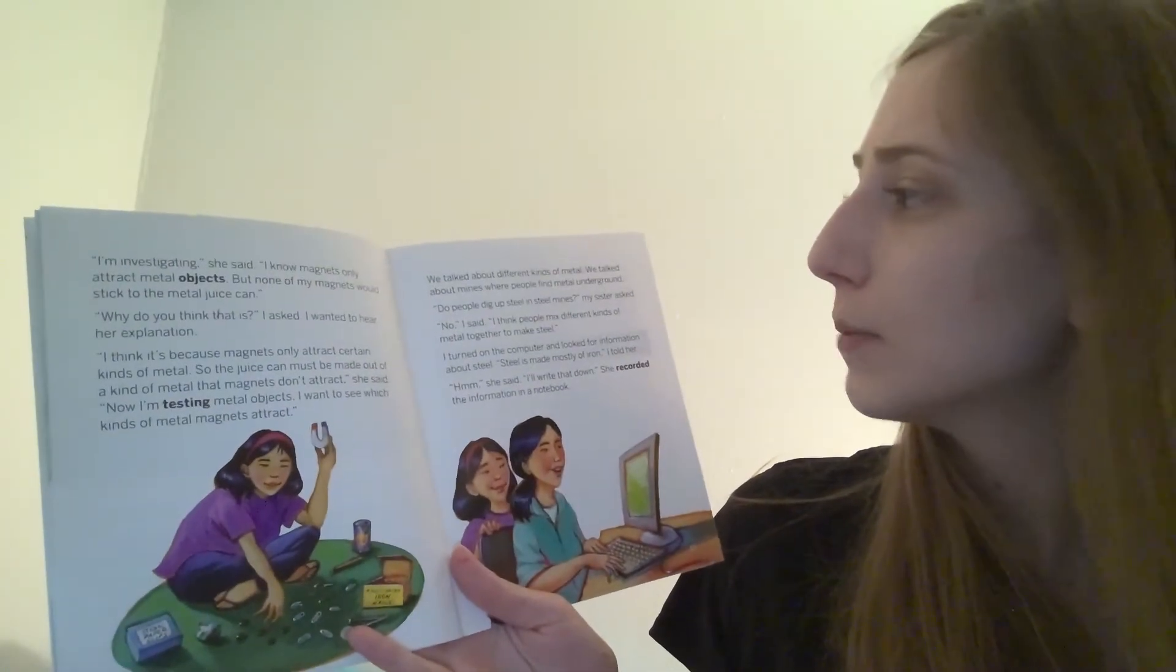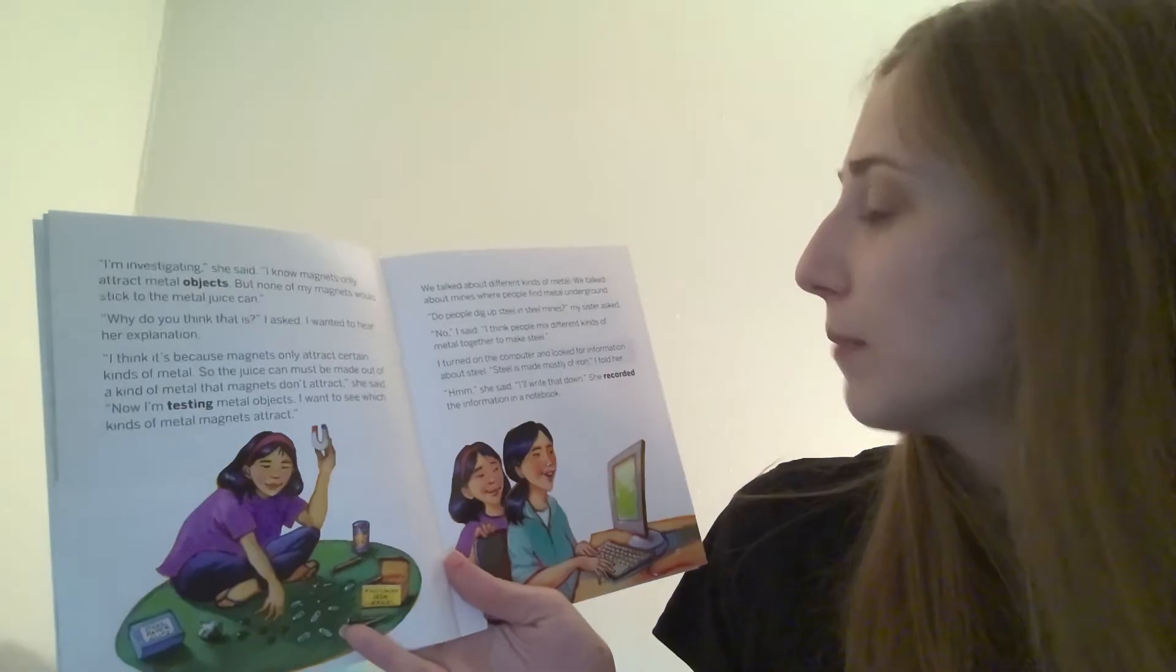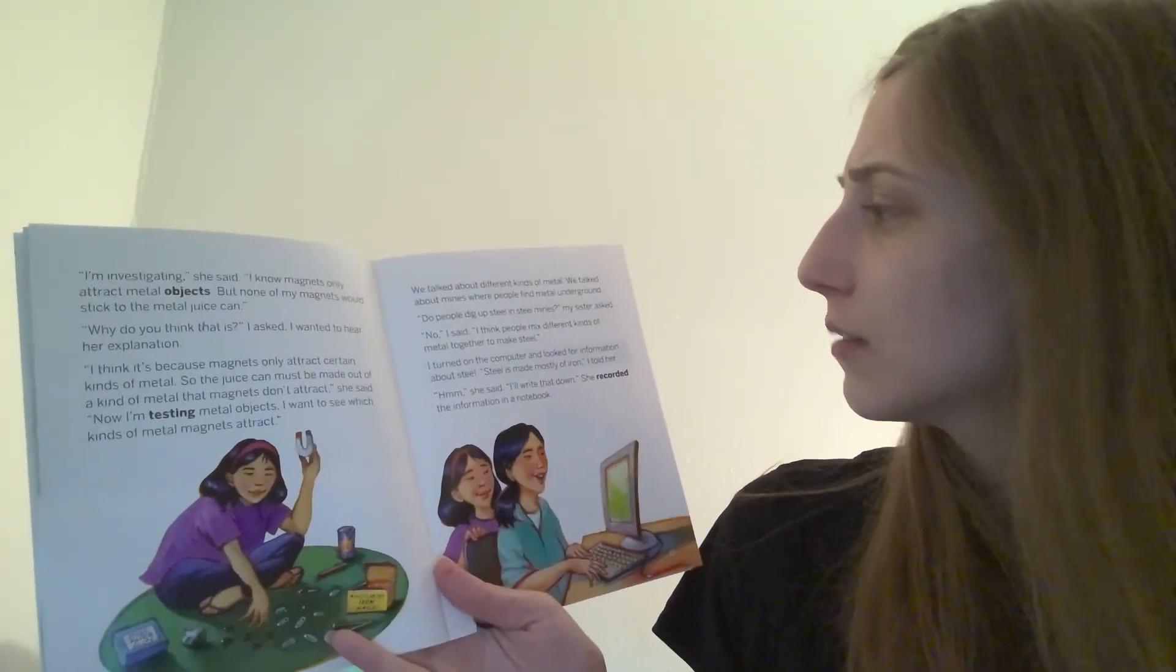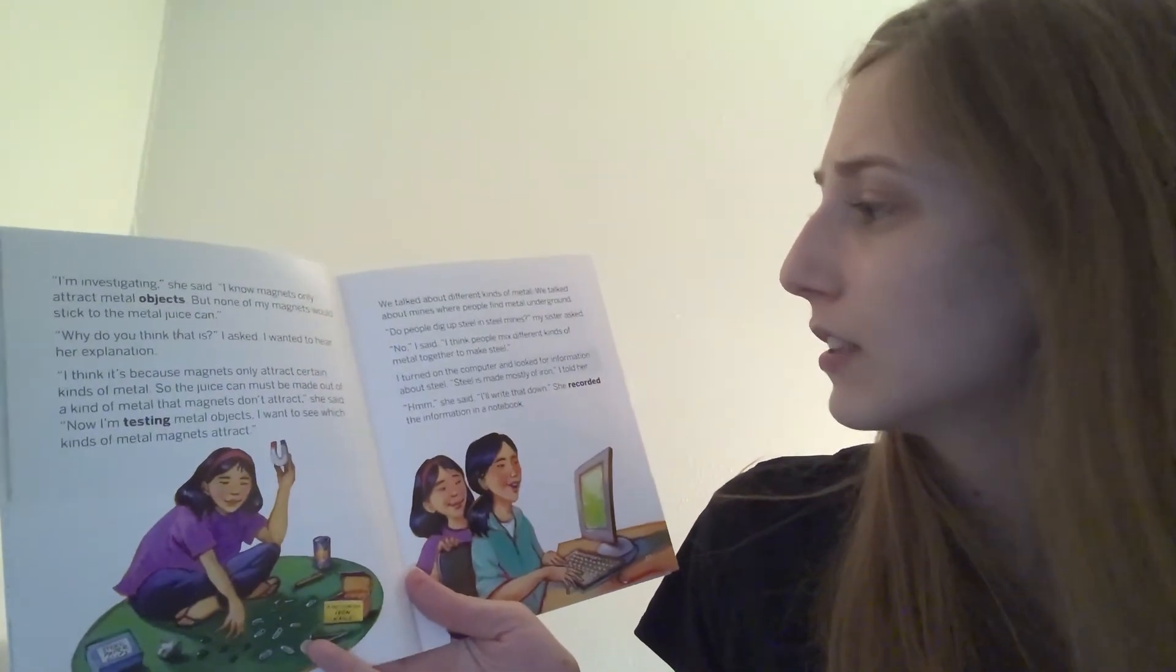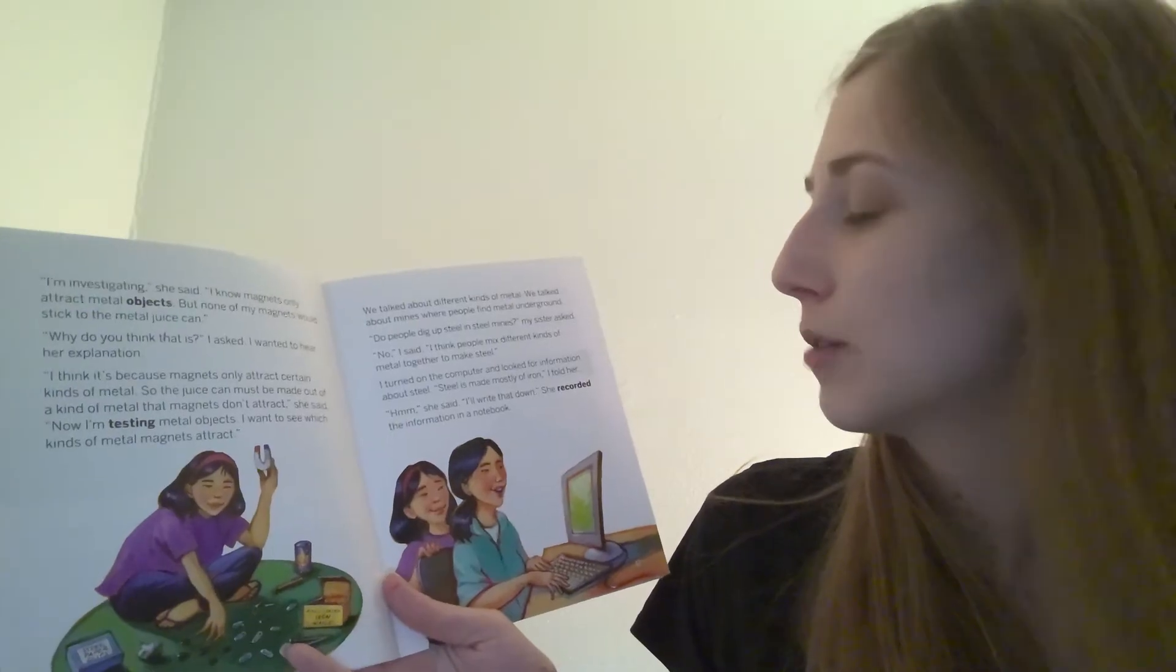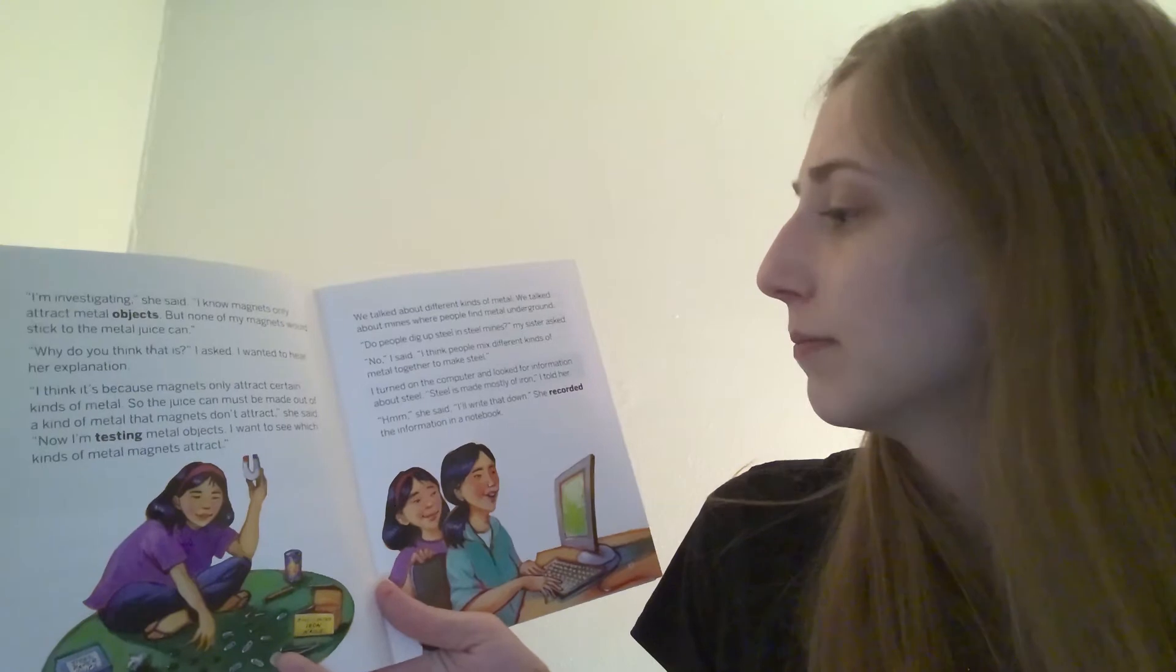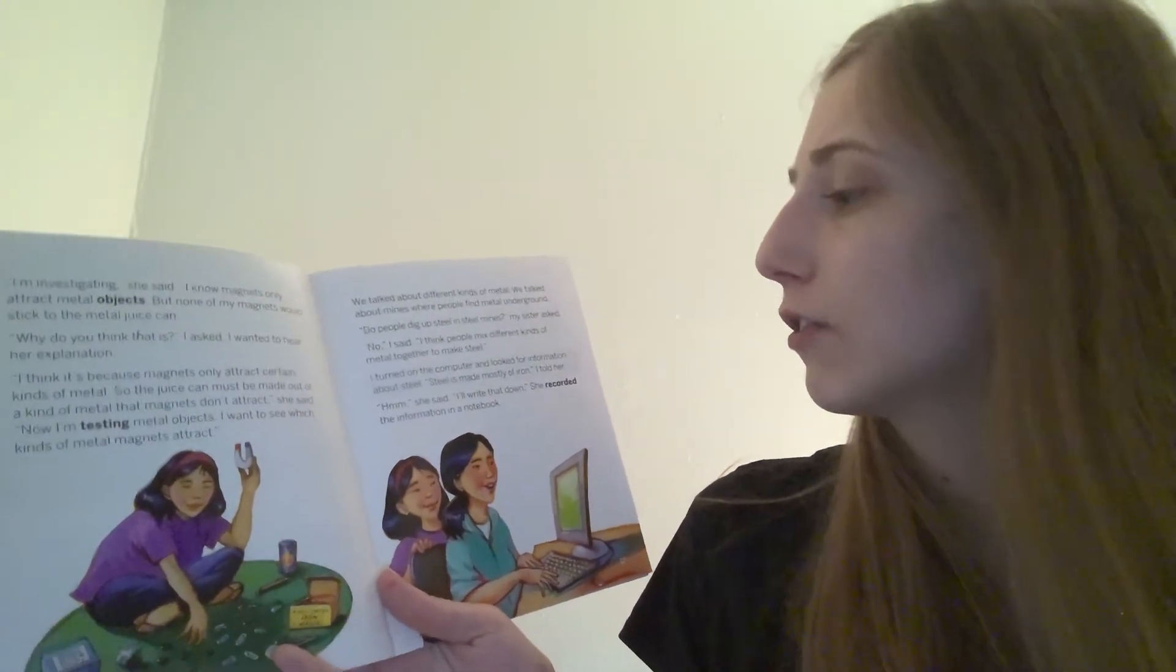We talked about different kinds of metal. We talked about mines where people find metal underground. Do people dig up steel in steel mines, my sister asked. No, I said. I think people mix different kinds of metal together to make steel. I turned on the computer and looked for information about steel. Steel is made mostly of iron, I told her. Hmm, she said. I'll write that down. She recorded the information in a notebook.